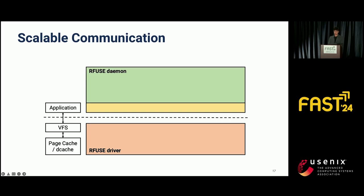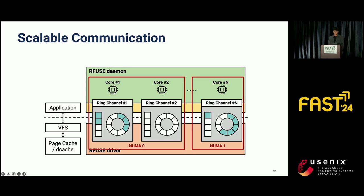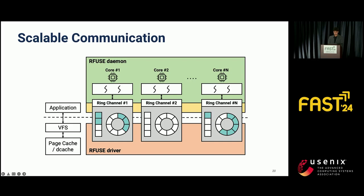A ring channel is created for each core when mounting the file system. When the ring channel is created, RFuse allocates each ring channel to memory on the same NUMA node as its corresponding CPU core, ensuring that RFuse does not access memory from a different NUMA node while processing requests. RFuse also supports a multi-threaded user space daemon. For each ring channel, the RFuse daemon creates a dedicated worker thread responsible for handling requests received from that channel, and sets the CPU affinity of worker threads to match the core ID of their assigned ring channel.